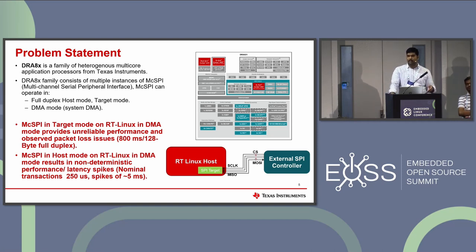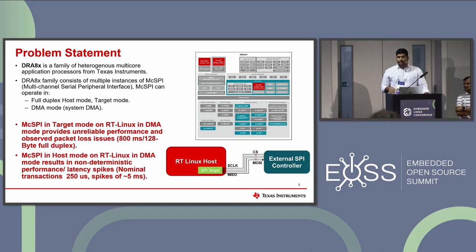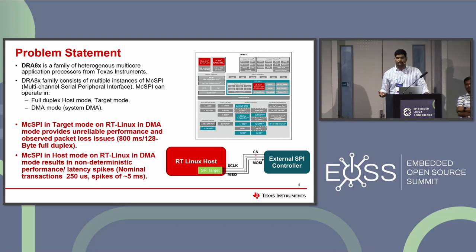We need hard real-time capabilities to process all data without any packet loss. We were also seeing another issue in SPI host mode where we were continuously initiating transactions and seeing latency spikes. Almost all the nominal transactions took 250 microseconds, but some transactions within a few minutes would go to a five millisecond spike. This analysis tries to solve the problem and make generic suggestions on how someone can extend to their own solutions.